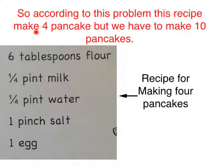According to this problem, this recipe makes 4 pancakes, but we have to make 10 pancakes and 4 does not go into 10 easily. So, the recipe is 6 tablespoons of flour, 1/4 pint milk, 1/4 pint water, 1 pinch of salt and 1 egg.